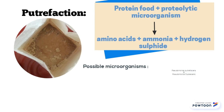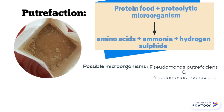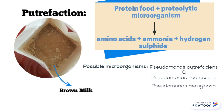The possible microorganisms are Pseudomonas putrefaciens and Pseudomonas fluorescens, which contribute to the formation of brown milk. Pseudomonas aeruginosa is also a possible proteolytic microorganism that causes the spoilage of milk.